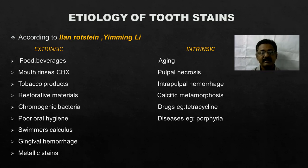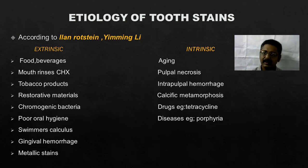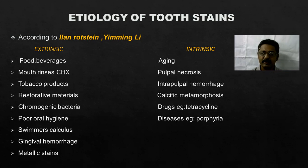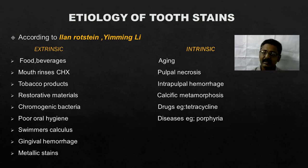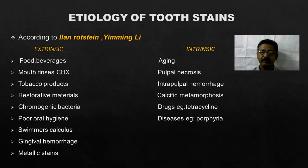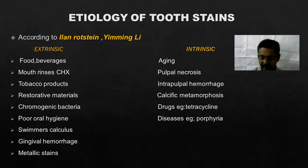The intrinsic causes are — one is most common, that is ageing. Once you age, the tooth color changes; it becomes more yellow because of the loss of enamel, dentine gets exposed and it becomes more yellowish. Then pulp necrosis — that is due to trauma — pulp damage can come and that will lead to the necrosis of pulp. That can cause discoloration. Then intra-pulpal hemorrhage, then calcific metamorphosis, drugs like tetracycline, and diseases like porphyria.